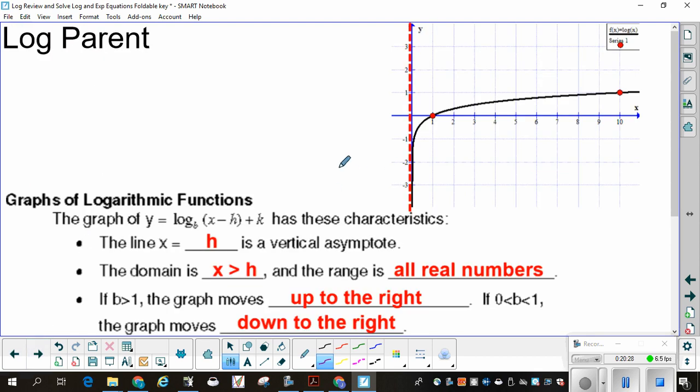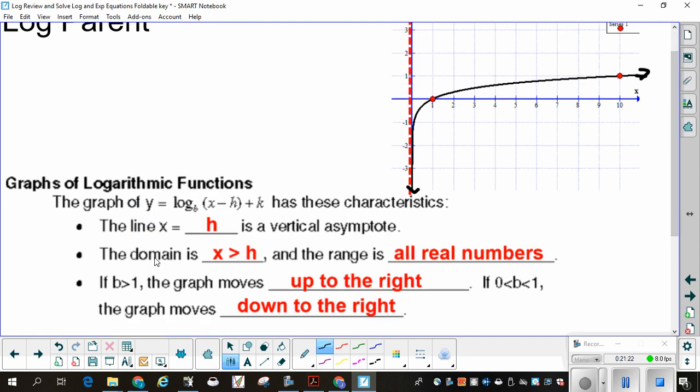Now for the graphing, because you will have graphing on your exam. Here's the parent function. When x is 1, y is 0. The graph of log base b of x minus h plus k has the following characteristics. The line x equals h is a vertical asymptote. The domain is x greater than h. And the range is all real numbers, because it goes down forever and up forever. Very slowly up, but still up. Domain is limited. Range is all real numbers.